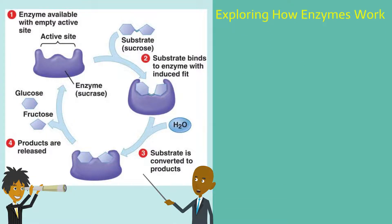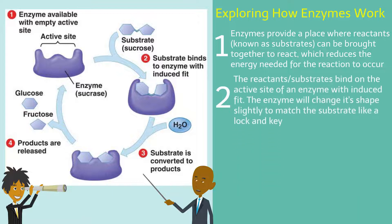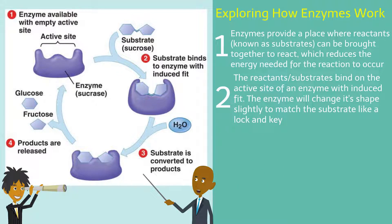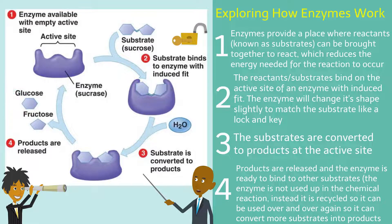Now let's explore how enzymes work. First, enzymes provide a place where reactants — known as substrates — can be brought together to react, which reduces the energy needed for the reaction. Second, the substrates bind on the active site of an enzyme with induced fit; the enzyme changes its shape slightly to match the substrate like a lock and key. Third, the substrates are converted to products at the active site. Fourth, products are released and the enzyme is ready to bind to other substrates. Notice the enzyme is not used up — it is recycled so it can convert more substrates into products.